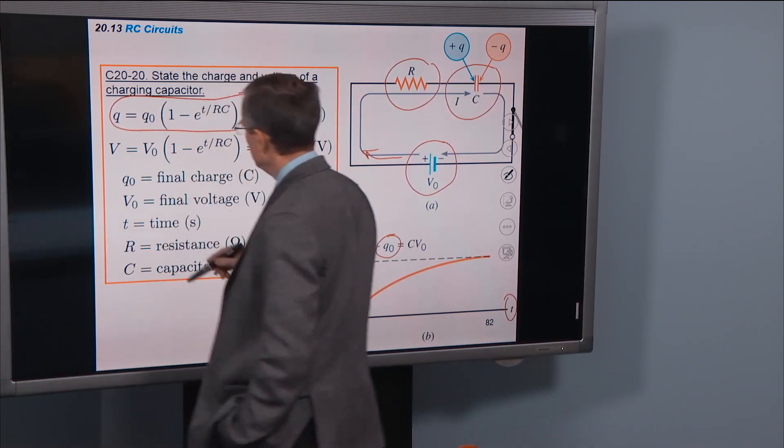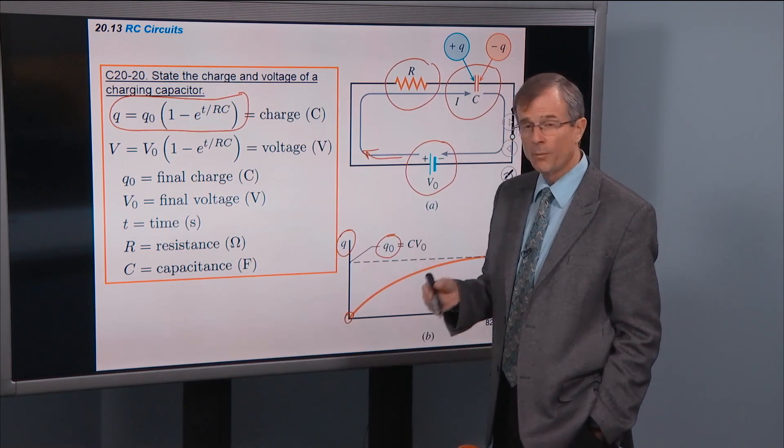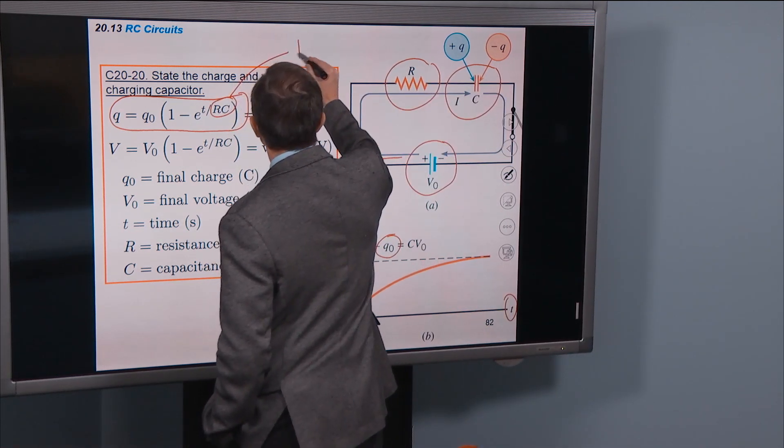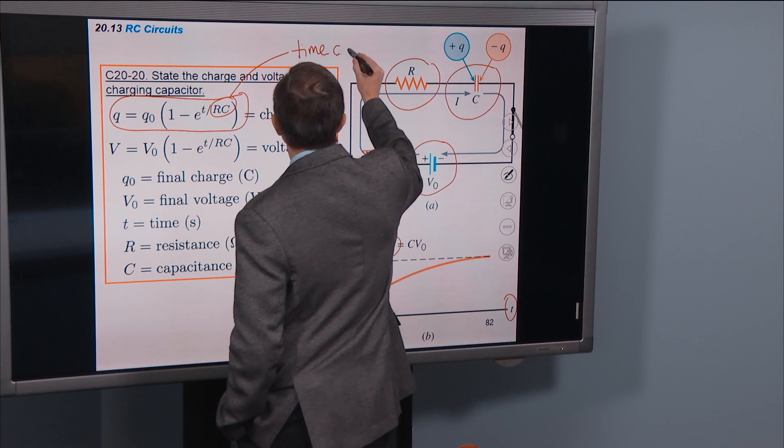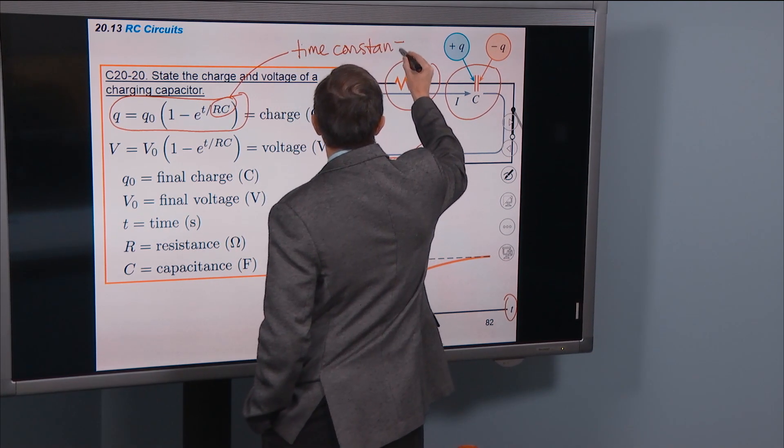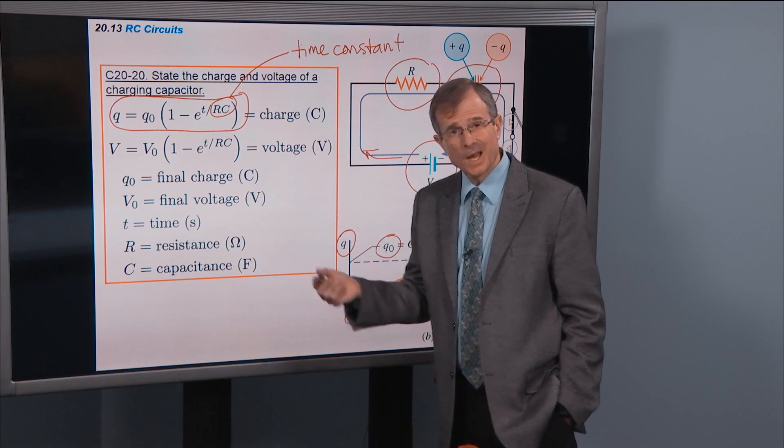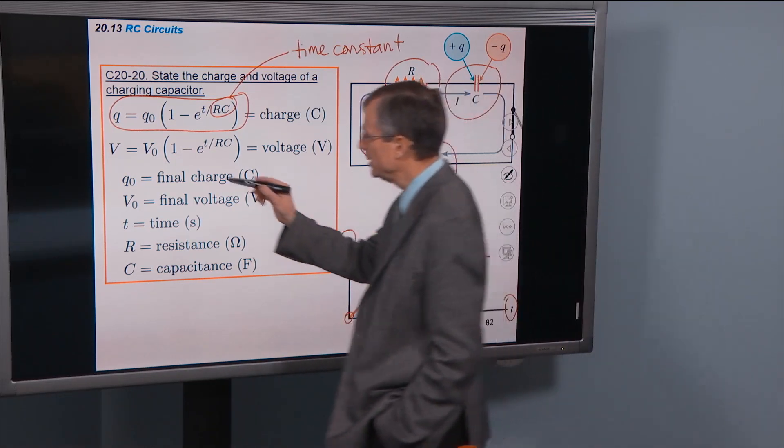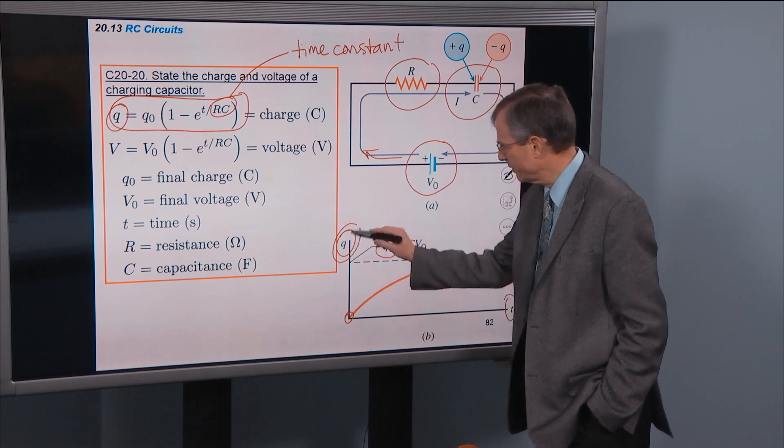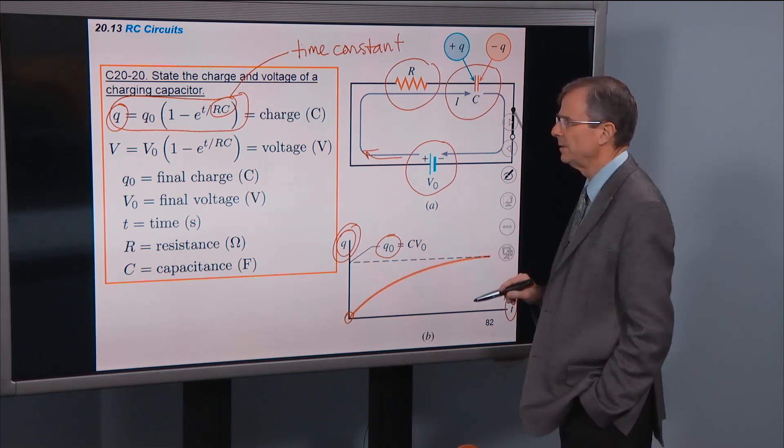Q equals q0 times 1 minus e to the minus t over RC. This RC is called the time constant. And so that's the charge, the time-dependent charge. This q is a function of time and it's represented graphically over here. It starts at zero and slowly asymptotically reaches q0.